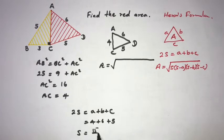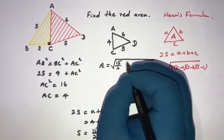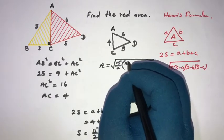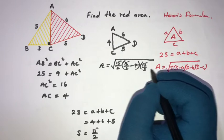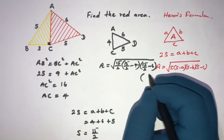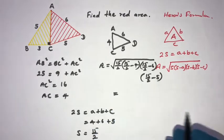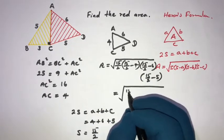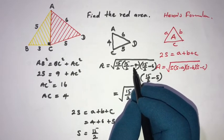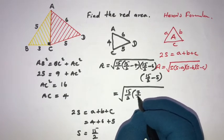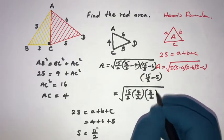A plus B plus C equals 4 plus 6 plus 5, which is 15. So S equals 15 over 2, which is 7.5. Now S minus A equals 7.5 minus 4 equals 3.5, which is 7 over 2. S minus B equals 7.5 minus 6 equals 1.5, which is 3 over 2. And S minus C equals 7.5 minus 5, which is 5 over 2.